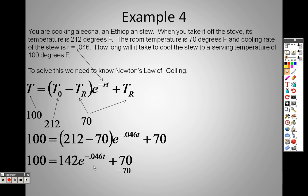So in order to do that, I subtract 70 on both sides, so 100 minus 70 is 30. So I have 30 equals 142 E to the negative 0.046.